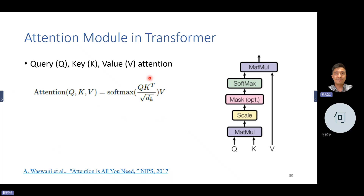The attention architecture looks like this: they put a softmax on top of the neural network. The softmax function shows which part of the input is more important than others. The basic idea is to use another layer to show the importance of different parts — like humans, who can only focus on one part of the data at a time.